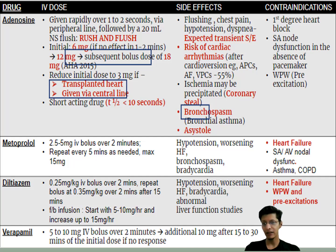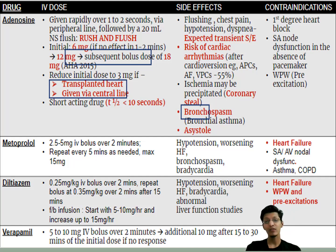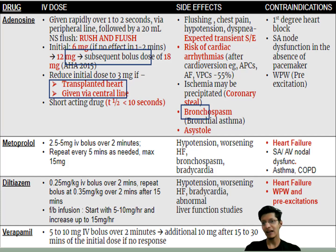Diltiazem: 0.25 mg/kg IV bolus over 2 minutes, repeat after 2 minutes at 0.35 mg/kg over 2 minutes, then after 15 minutes followed by infusion of 5 to 10 mg/hour, increasing up to 15 mg/hour. Monitor for heart failure and WPW; check heart rate and blood pressure, especially SBP. Verapamil: 5 to 10 mg IV bolus over 2 minutes; additional 10 mg after every 15 to 30 minutes if there is no response.